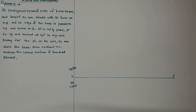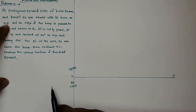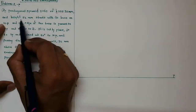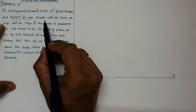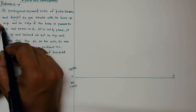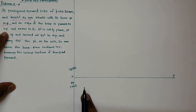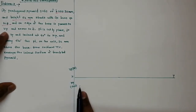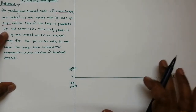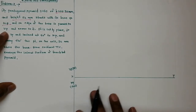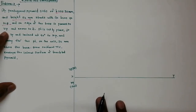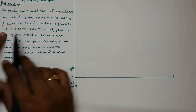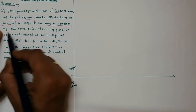Now we will read the problem: a pentagonal pyramid of side 30 mm and height 52 mm stands with its base on HP. So the true shape comes in HP — here we get the front view and here we get the top view. All development problems always start with the HP; we draw the true shape first and then the front view. The condition given is that an edge of the base is parallel to VP.